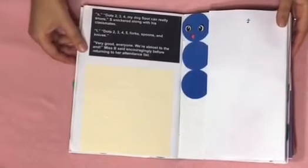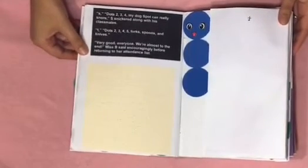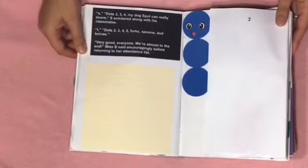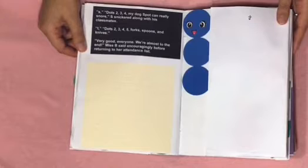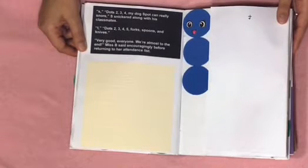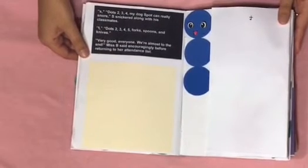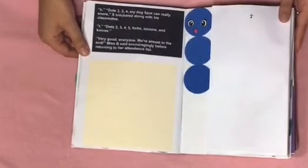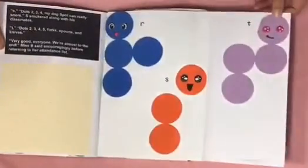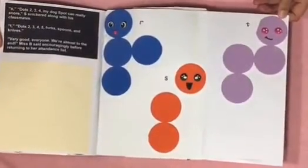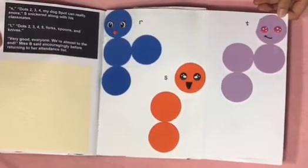S dots two, three, four. My Dot Spot can really snore, S snickered along with his classmates. T dots two, three, four, five. Forks, spoons, and knives. Very good, everyone. We're almost to the end, Miss B said encouragingly before returning to her attendance list. Here is blue Little R, an orange Little S, and a lavender Little T.